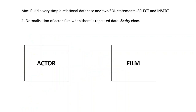We can represent the actor by a box, and the film by a box. These are pictures that represent entities. If an actor is in many films, we can use the usual crow's foot diagram. If a film contains several actors, then the crow's foot is round the other way — one film contains several actors. Combining those two together into an entity relationship diagram, you can see an actor appears in several films, and a film has several actors.